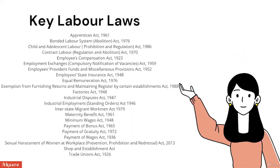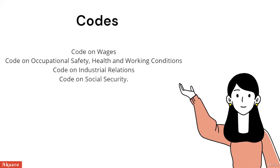The labour laws in India are very complicated. For example, the definition of basic wages and the definition of workmen differ from act to act. To avoid this, a few of the labour laws are clubbed and made into four categories, also called Codes. These Codes are: Code on Wages, Code on Occupational Safety, Health and Working Conditions, Code on Industrial Relations, and Code on Social Security.